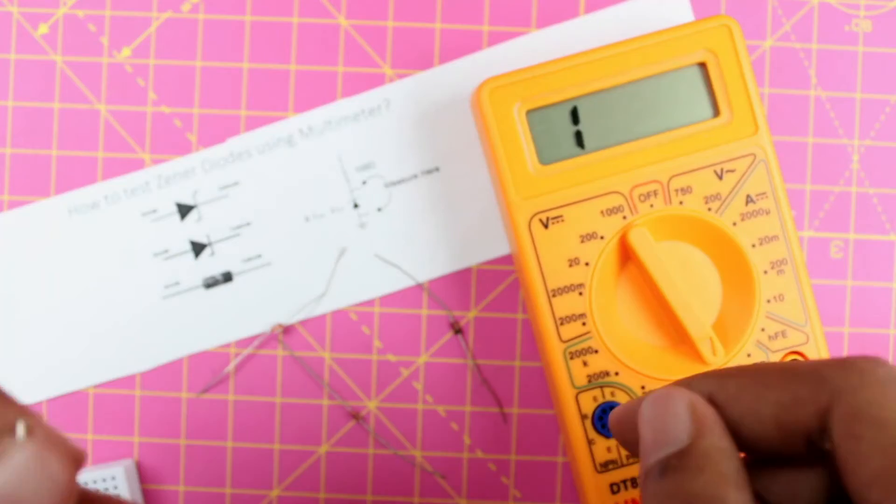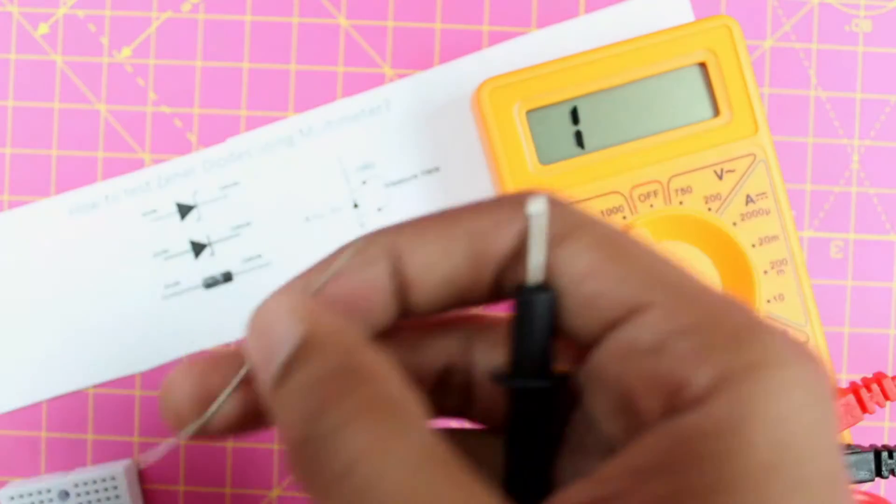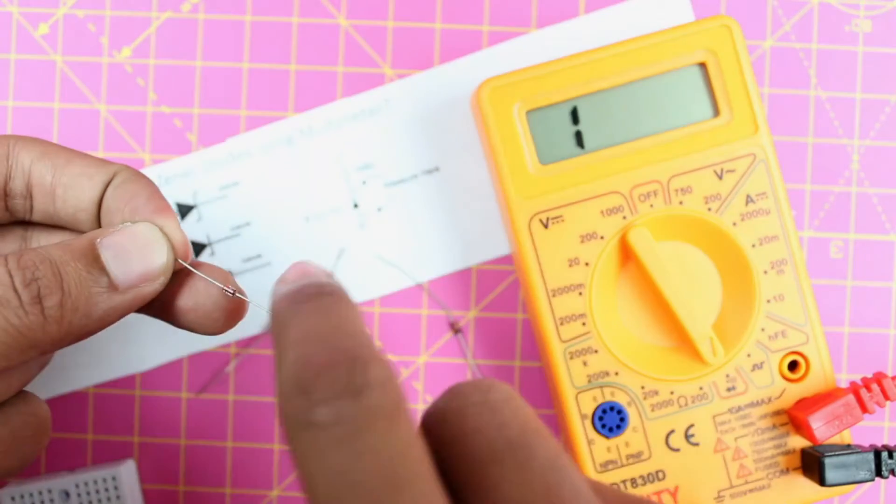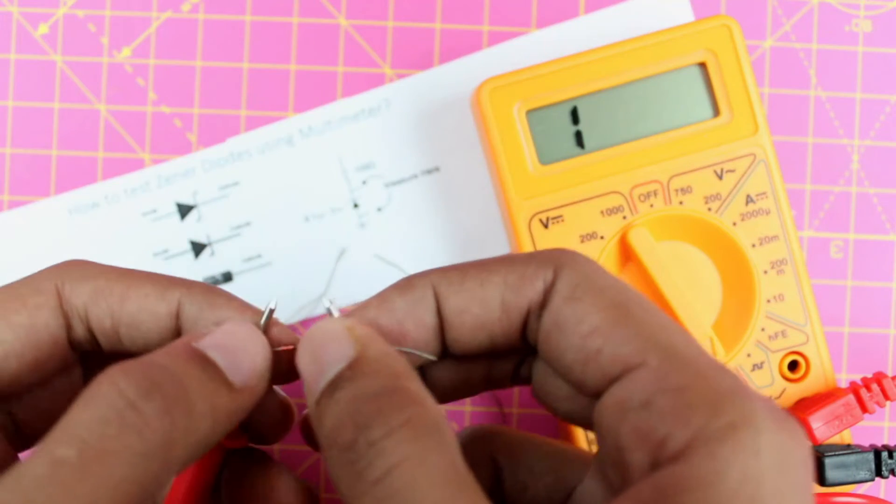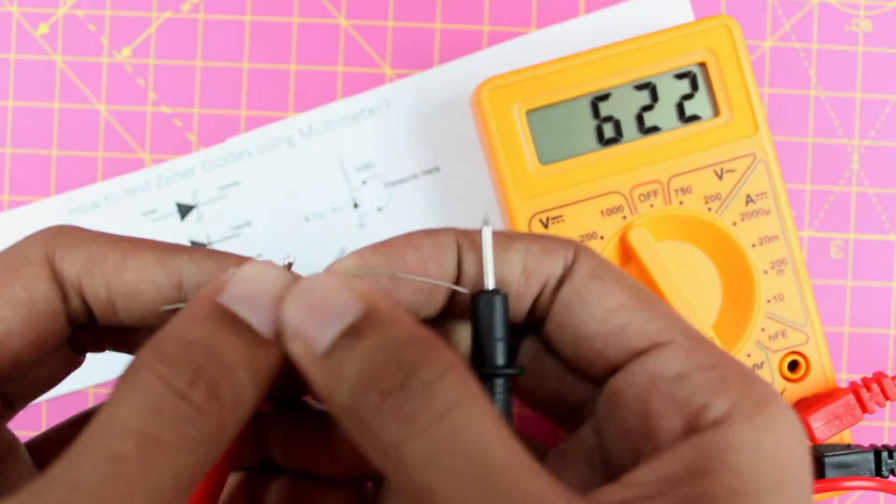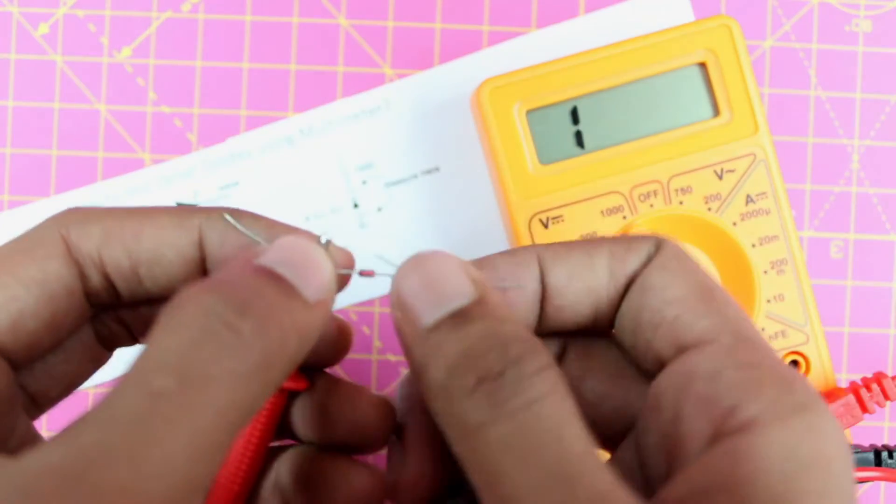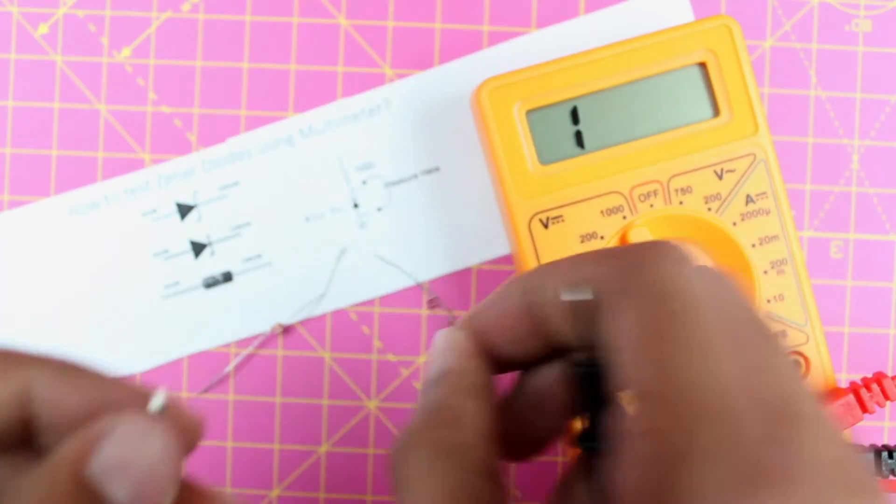Similarly let's check for another zener diode. Again we have our zener diode here. I know that this pin is the cathode and this pin is the anode. So I will just keep my probes. You can see I am getting a voltage drop of 0.6 volt. And when I flip the polarity you can see that it does not give any voltage drop. So this zener diode is also working.